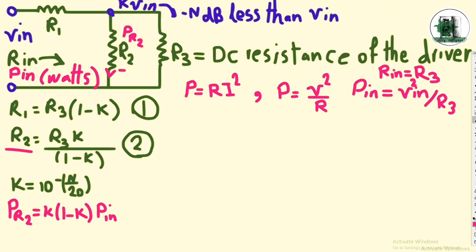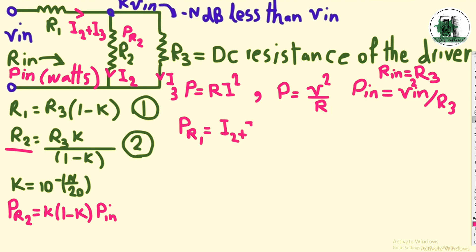There are two currents, I2 and I3, for R2 and R3 respectively. The sum of these currents passes through R1. According to the first equation for electrical power, we can write the power consumed by R1.